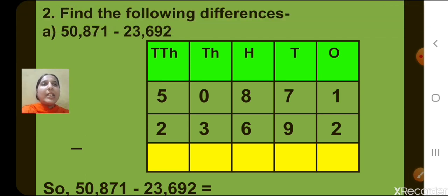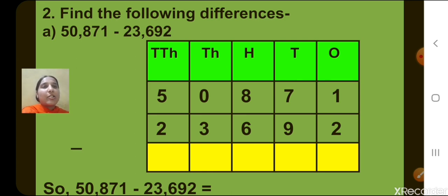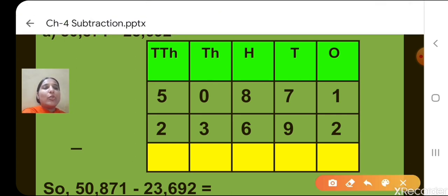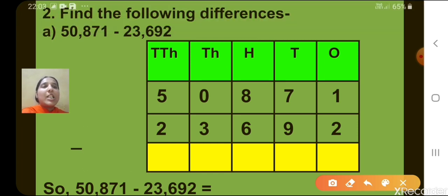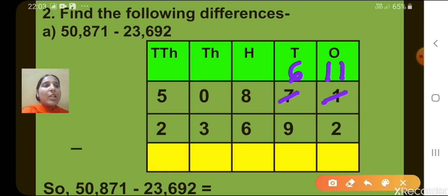Now let's move to the next question. Question number 2 is: find the following differences. Two numbers — the minuend and subtrahend — are given and we have to find the difference. The minuend here is 50,871 and the subtrahend is 23,692. Let's start from the 1's column. 1 minus 2 — there you can see that is not possible. It means we have to borrow from the 10's place. When we borrow 1 from the 10's place, the digit 7 becomes 6. And at the 1's place, now we have 11. So 11 minus 2, what will we get? 9.